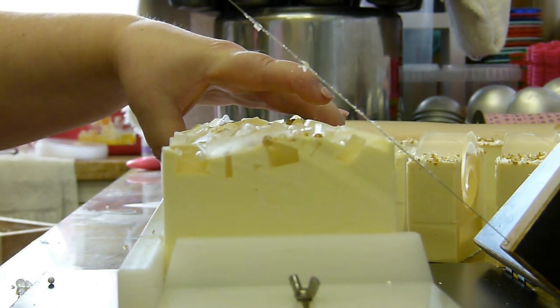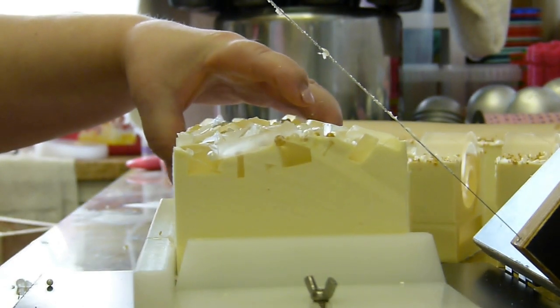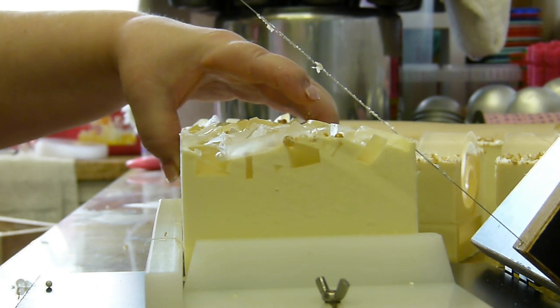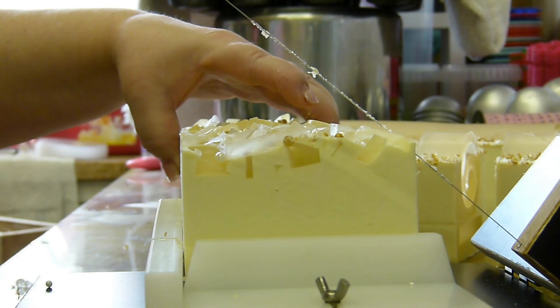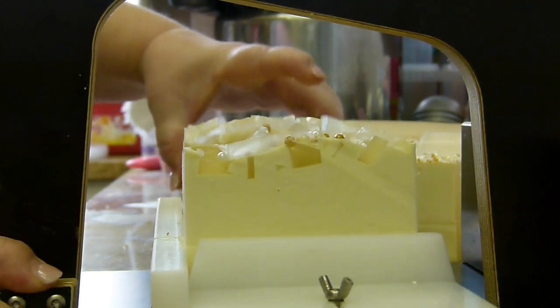But I don't know whether just to make this smaller slices or do them as a normal size and just sell them cheaper. I guess I could do both, couldn't I?